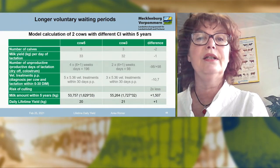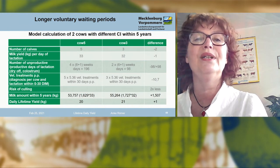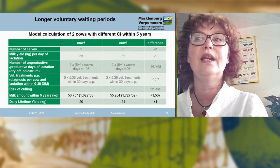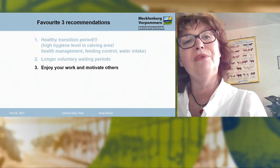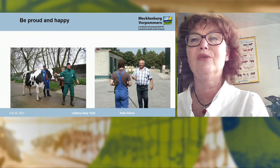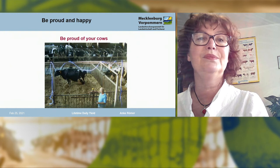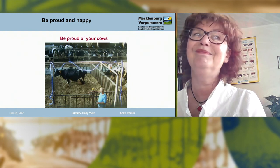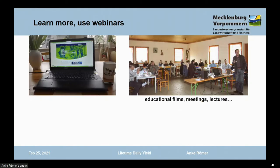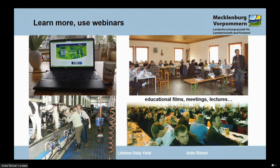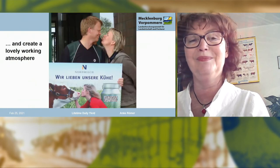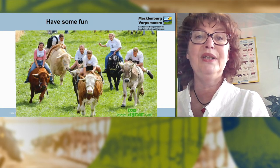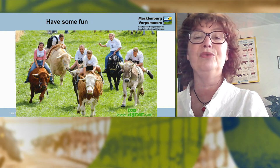Because of more days in milk, cow three has a higher amount of milk of 1,500 kilograms within five years and one kilogram higher daily lifetime yield. My third recommendation: enjoy your work and motivate others. Be proud and happy, even in difficult times. Be proud of your cows. Learn more — use webinars like this, educational films, meetings, lectures. Love your cows and create a lovely working atmosphere. If you are happy with your work, you will be able to achieve all aims.